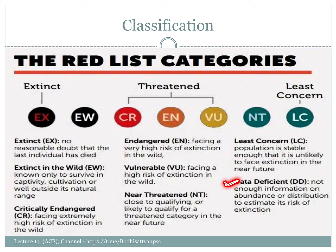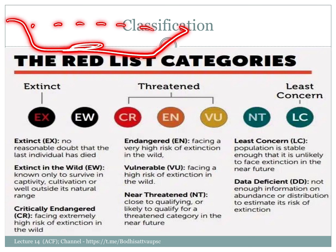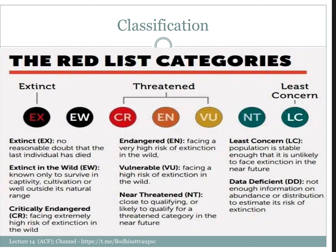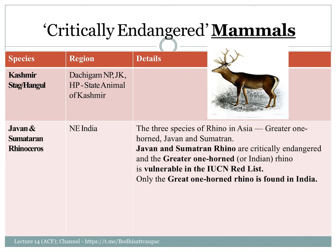Data deficient: if we just hear about data deficient, think of a deep sea or deep ocean floor like the Mariana Trench. There are a lot of species there, but because there is very little research, there is very little data. So those fall into the data deficient category. Let me now talk about critically endangered species in India.